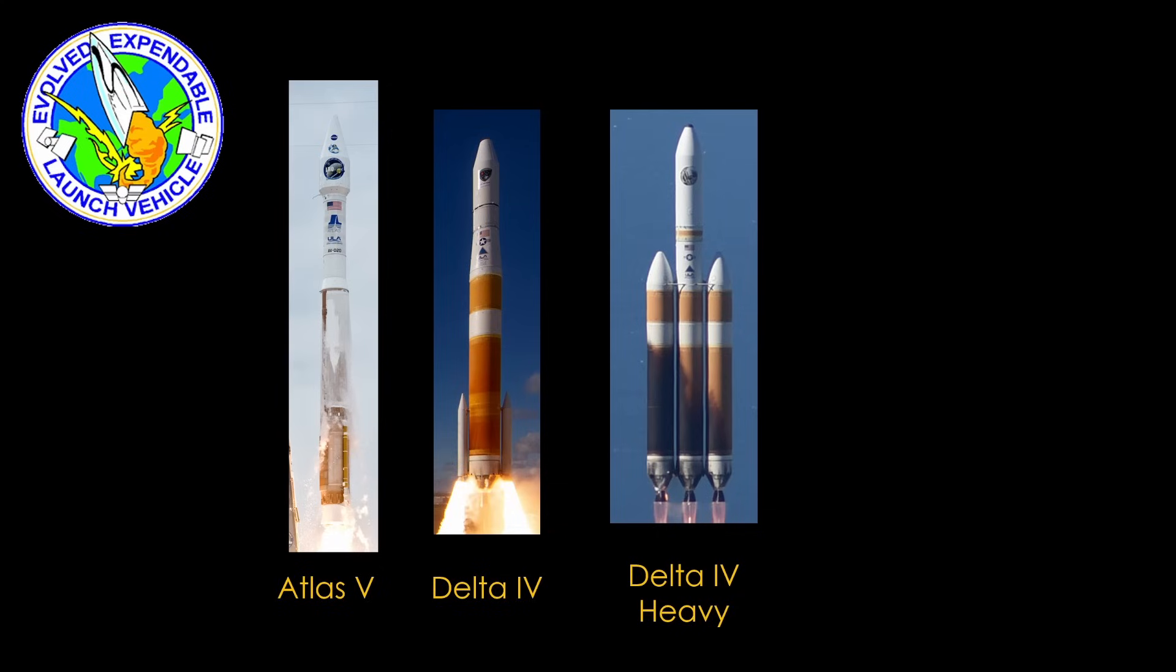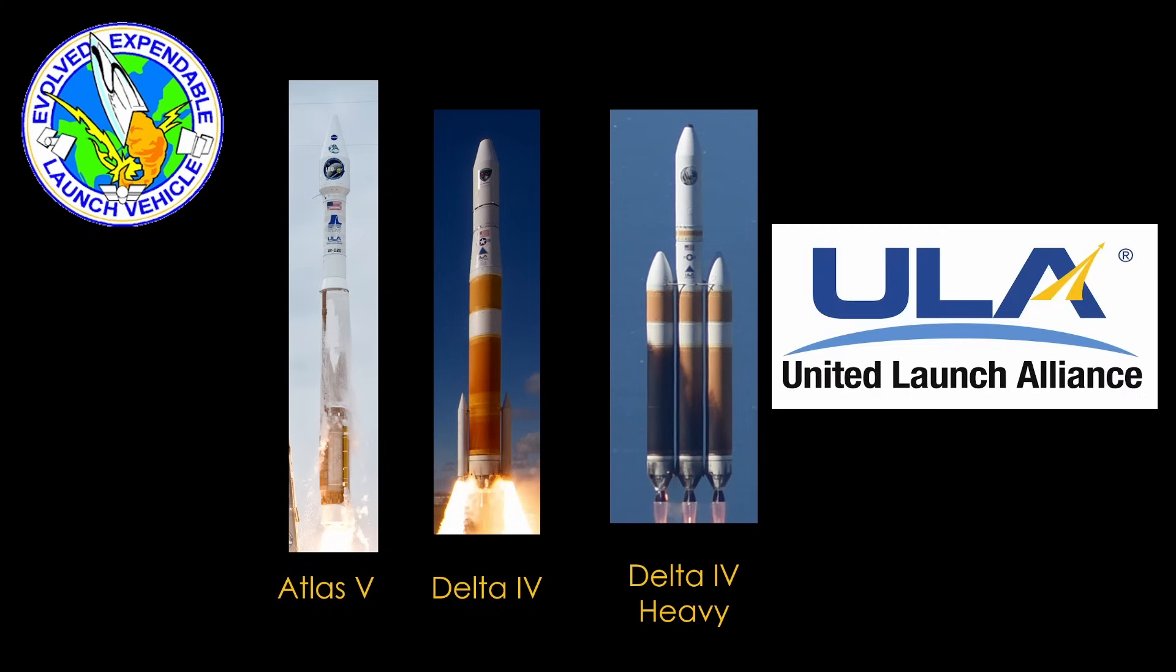The evolved expendable launch vehicle program was created in 1994 to provide the US Department of Defense assured access to space for bigger payloads than could be launched by the Atlas 2 or Delta 2 vehicles. They also hope to reduce the price of launches. In 1998, the Air Force awarded contracts to Lockheed Martin for the Atlas 5 and McDonnell Douglas for the Delta 4. It turned into a very lucrative contract for both companies, and when they merged in 2006 to form a United Launch Alliance, they had a monopoly on Department of Defense launches.